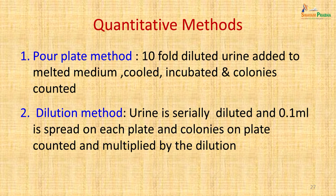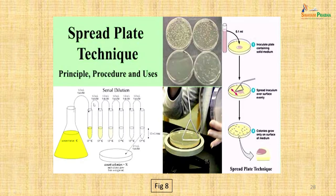More accurate urine counts can be done by quantitative methods such as the pour-plate method, where 10-fold dilutions of urine are added to melted medium, cooled, incubated and colony-counted next day. In the dilution spread-plate method, urine is serially diluted, 0.1 ml is spread on each plate, and colonies are multiplied by the dilution. However, quantitative techniques are more tedious for busy laboratories, so semi-quantitative techniques are routinely used and quantitative methods are reserved for research.